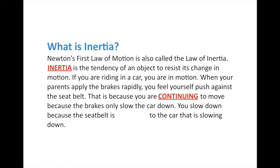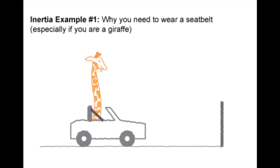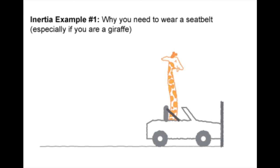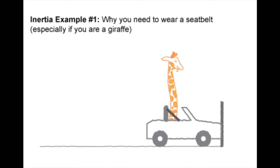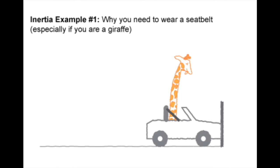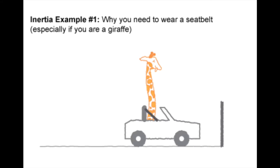You're still going at 100 kilometers per hour. The reason you slow to a stop is because the seatbelt — and you should always wear your seatbelt — is attached to the car that is slowing down. So the seatbelt is the outside force that slows you down. This is why you need to wear a seatbelt, especially if you're a giraffe — look at the head of the giraffe when it hits the wall, the head keeps going. That's also why we have airbags: whenever there's a car accident, you continue to move forward, and the airbag pops out and slows you down.